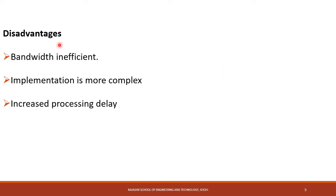Now coming to the drawbacks of spread spectrum modulation. In spread spectrum modulation, spreading codes transform the narrow band data signal into a noise-like wide band signal. This leads to an increase in the transmission bandwidth, an increase in the system complexity, as well as processing delay.